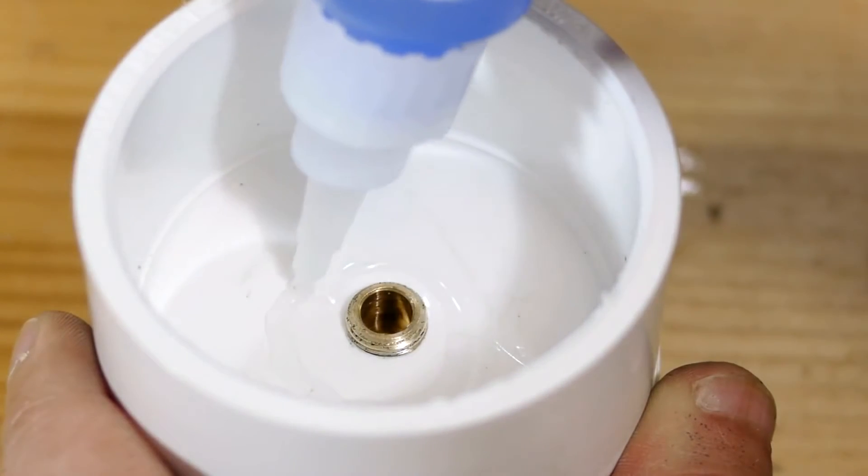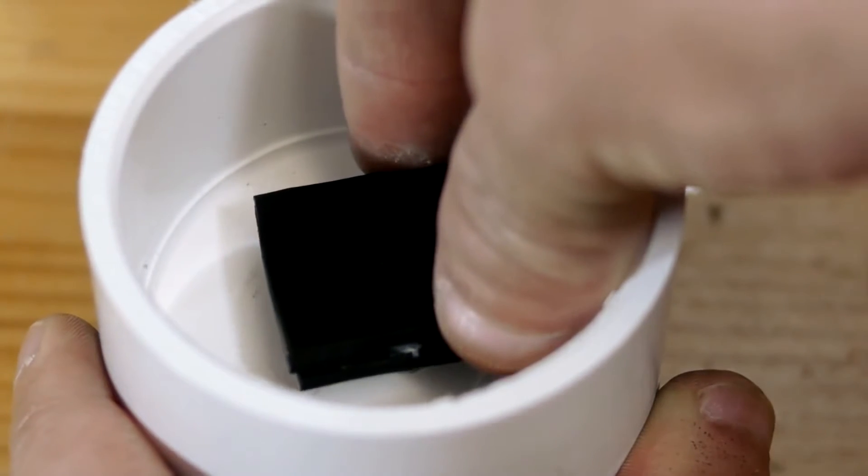With a ring of superglue around the hose fitting, the one-way valve can be glued permanently into place.